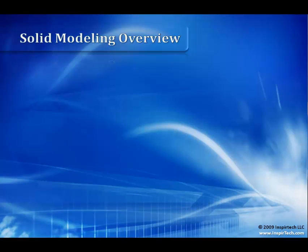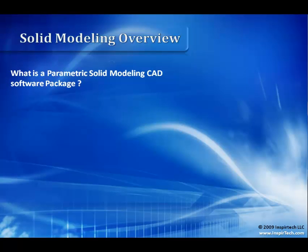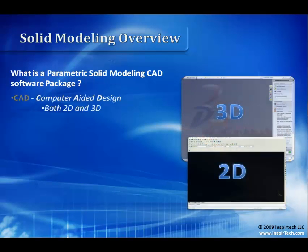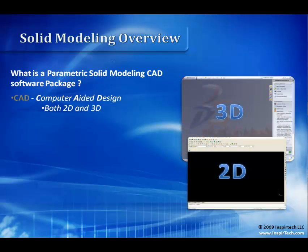SolidWorks is a 3D parametric solid modeling CAD software package. Let's break that down. The acronym CAD stands for computer-aided design. Computer-aided design software can either be 2-dimensional or 3-dimensional — SolidWorks is a 3-dimensional CAD package. There is also CAM for computer-aided manufacturing and CAE for computer-aided engineering. A CAM software package is used to program computer-controlled machines.